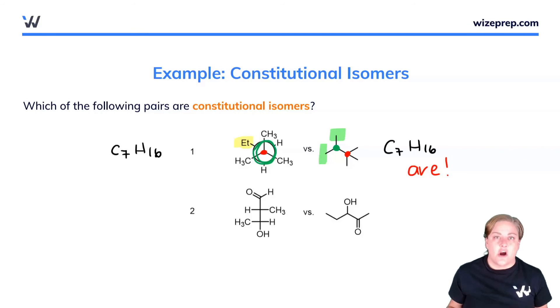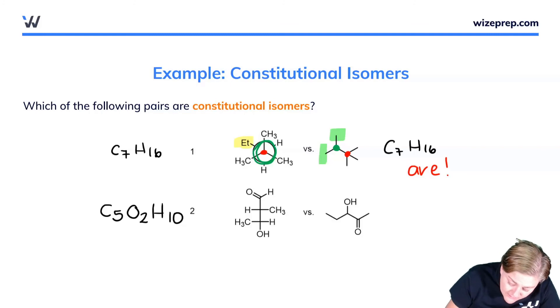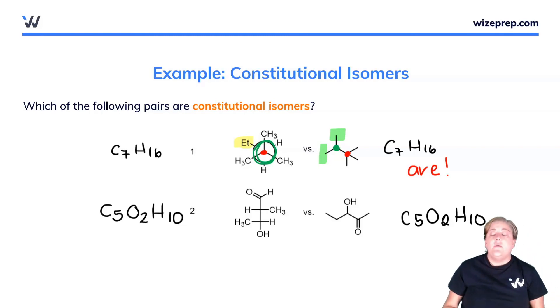Let's look at the next set of examples. Let's start by counting the number of carbons: one, two, three, four, five in the first structure. I look for the number of oxygens - I have two. And I'll count the number of hydrogens: one, two, three, four plus six for ten. So C5O2H10. Let's do the same next door. I'll count the carbons: one, two, three, four, five. C5, two oxygen atoms, and the hydrogens: one, two, four plus six is ten. So wonderful, we also have the potential for isomers here because we have the same molecular formula.